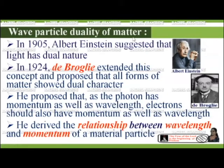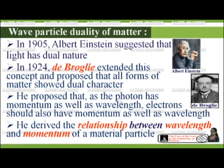Wave-particle duality of matter. In 1905, Albert Einstein suggested that light has dual nature. In 1924, de Broglie, a French physicist, extended this concept and proposed that all forms of matter show dual character. He proposed that as photons have momentum as well as wavelength, electrons should also have momentum as well as wavelength. He derived the relationship between wavelength and momentum of a material particle.